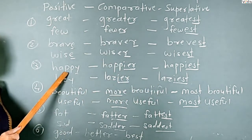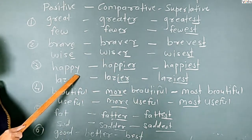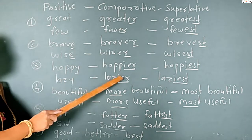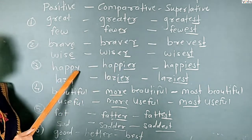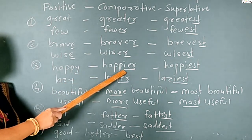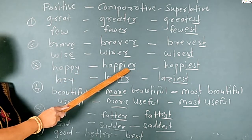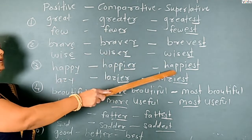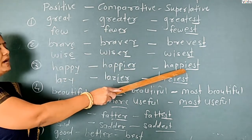So when the word ends in the letter Y, the comparative form takes -ier and the superlative form takes -iest.